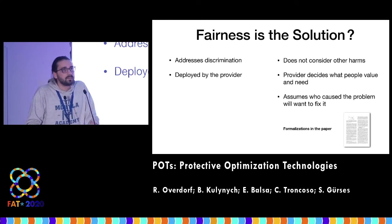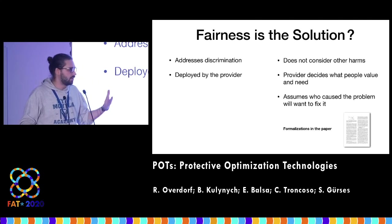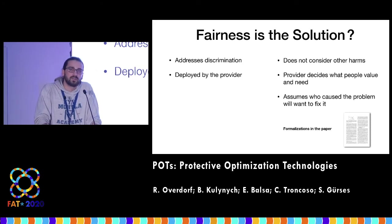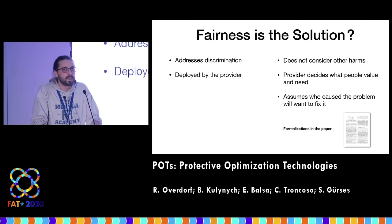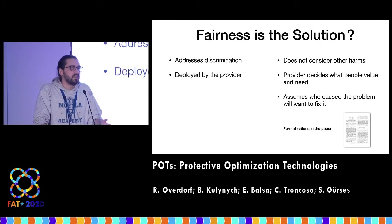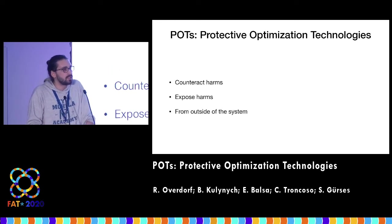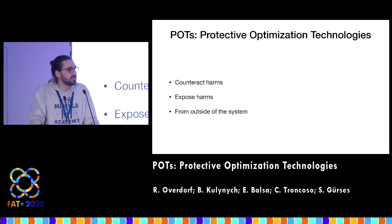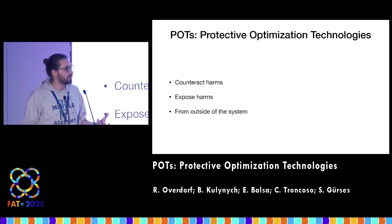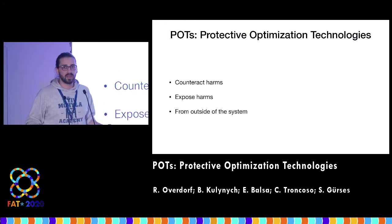In light of these drawbacks of algorithmic fairness by design, is there anything else we can do? There are policy and legal solutions, but is there anything else still in the technological domain? We argue yes — and it is what we call Protective Optimization Technologies, or POTS for short. These are technological tools and interventions that counteract and expose harms of optimization systems from outside of the systems.